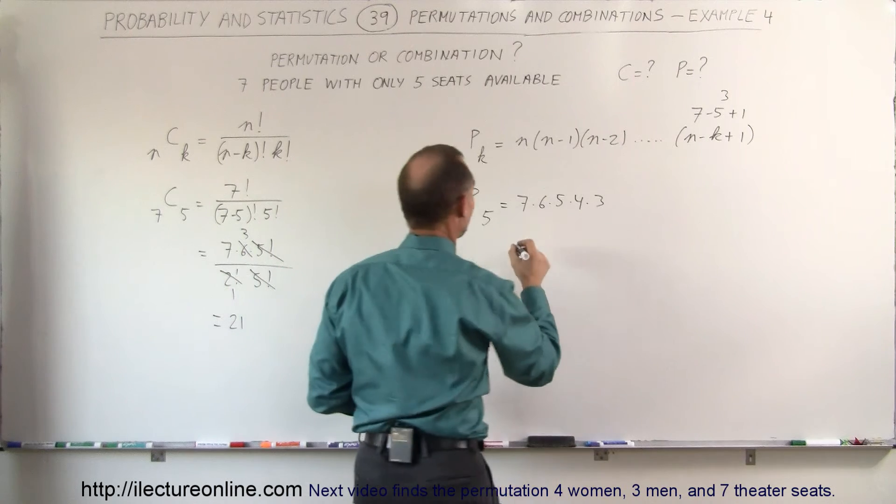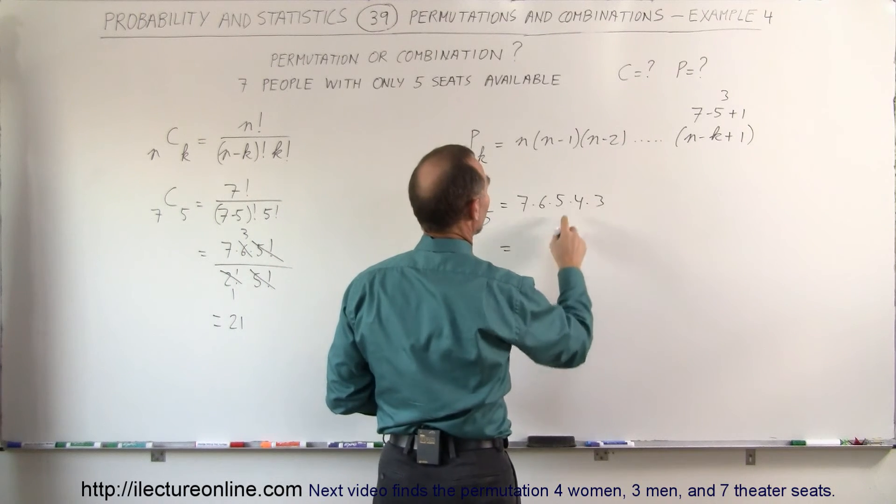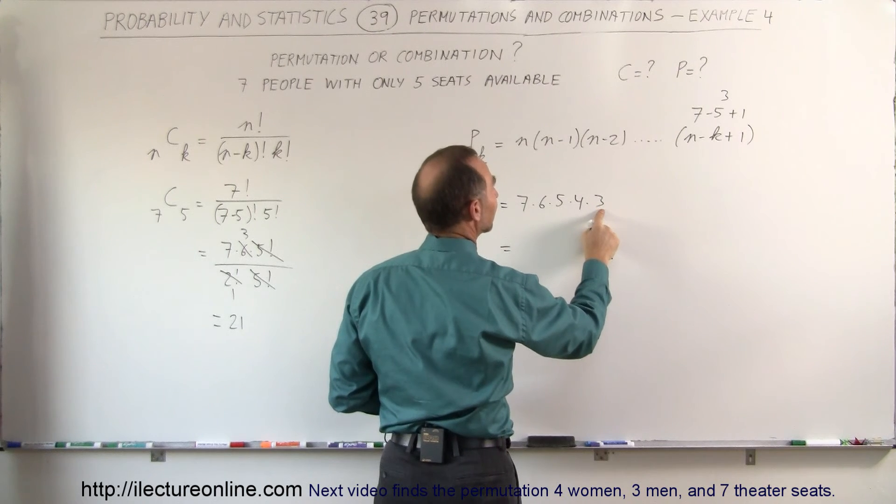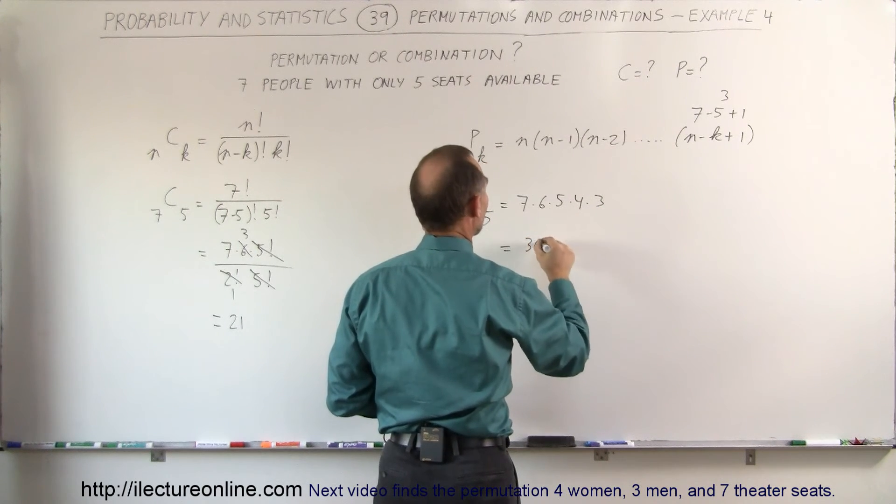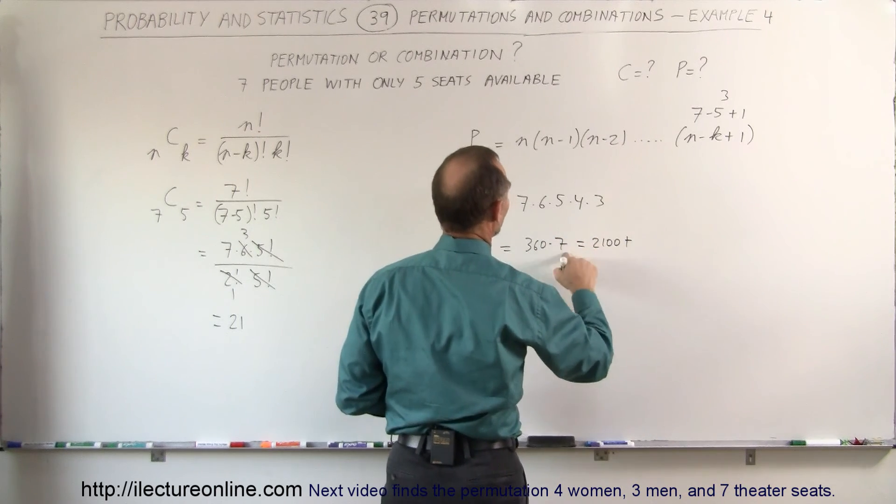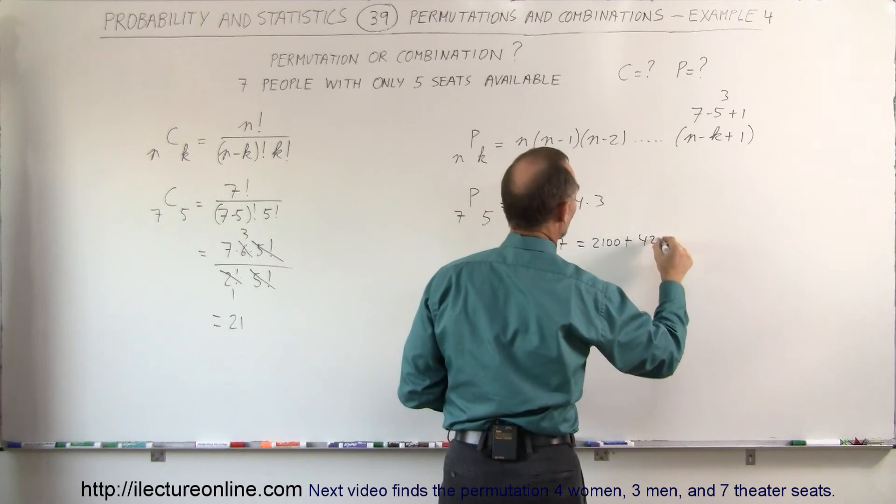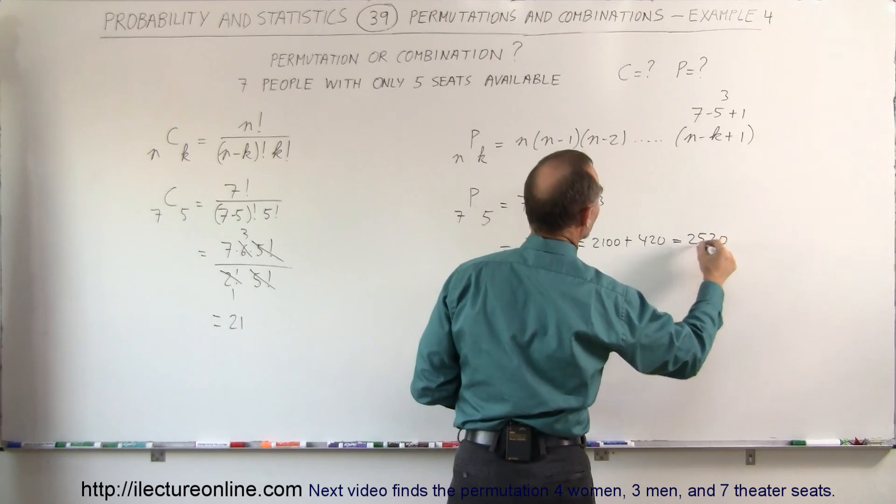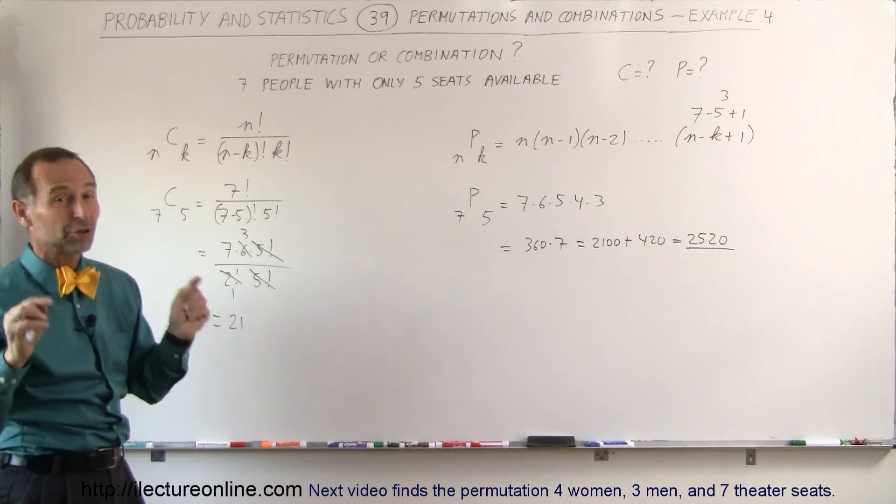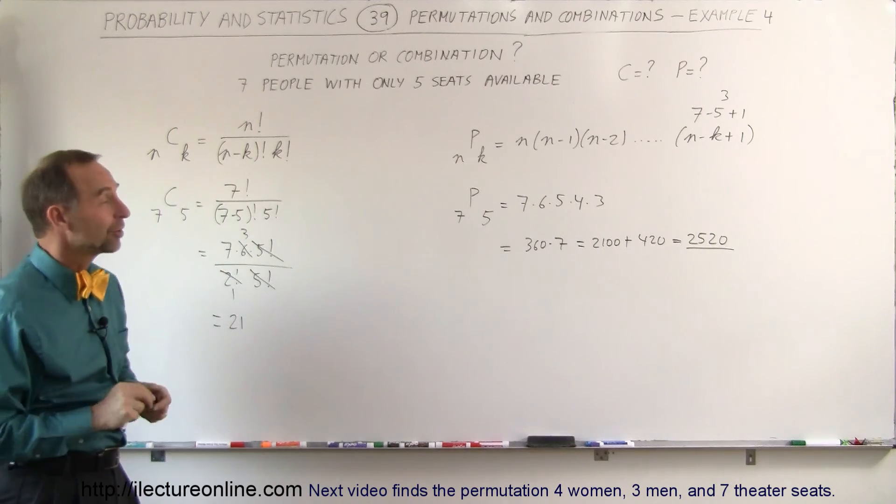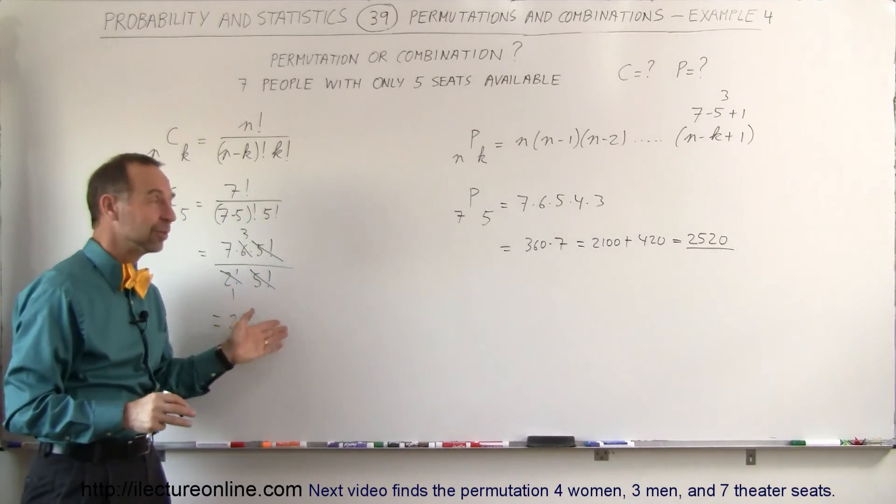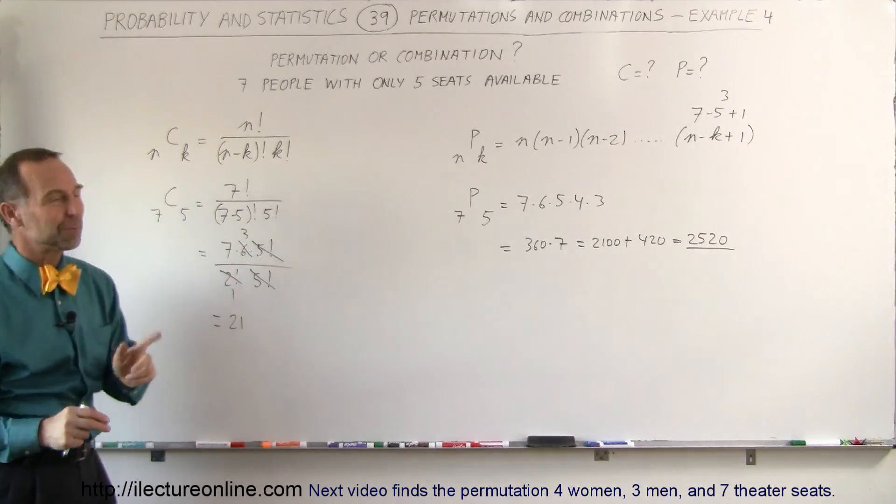Now we just have to multiply those out, see what we get. So this is equal to, that would be 30 times 3 is 90, times 4 is 360, so 360 times 7, which is equal to 2100, plus 7 times 6, that would be 420, which is equal to 2520 different ways in which you can seat 7 people on 5 seats if the order does matter. You can then rearrange them a number of times to get a total of 2520, that's a big number. But that's how we do combinations and permutations with 7 people and 5 seats.